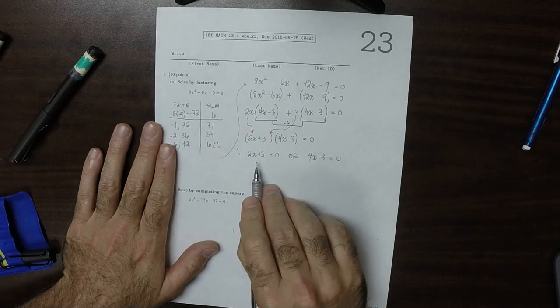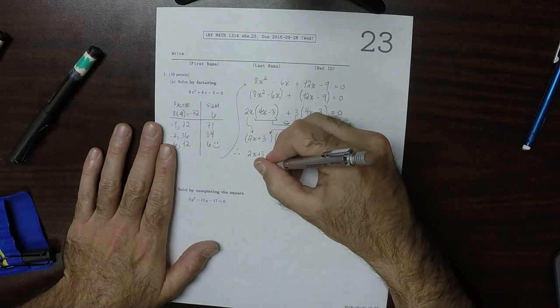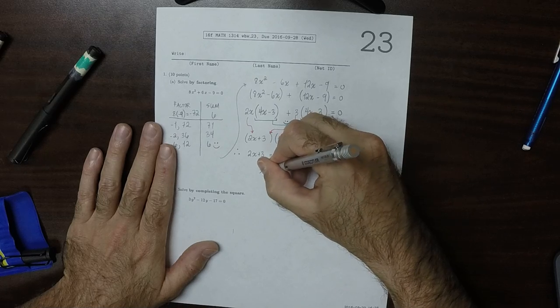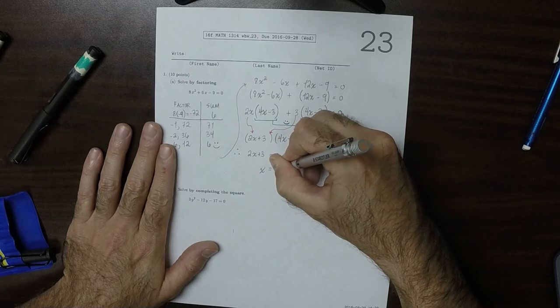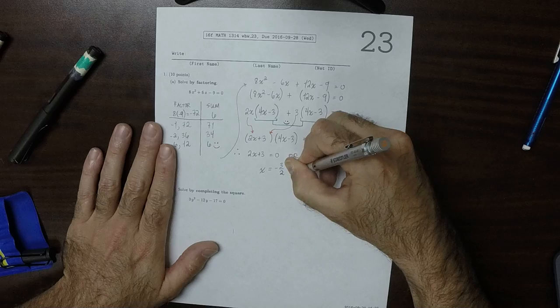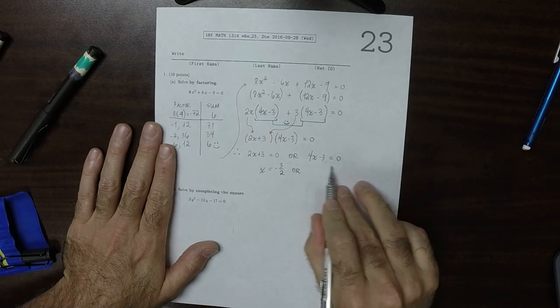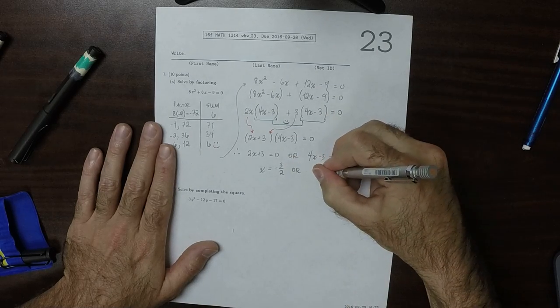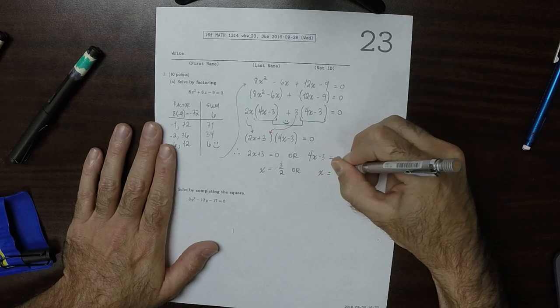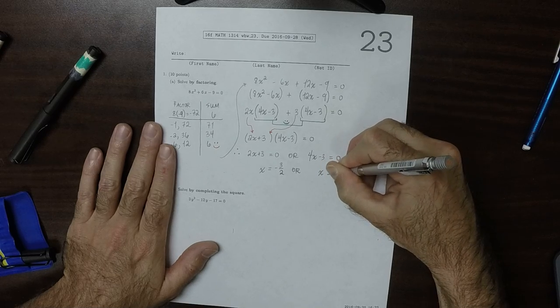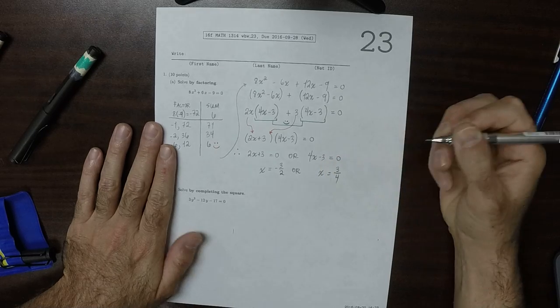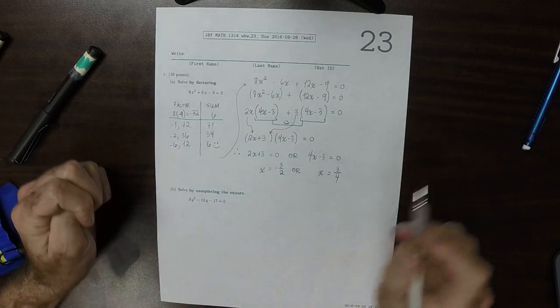we know that 2x plus 3 is 0, or 4x minus 3 is 0. Solving this one, move the 3 to the other side and divide by 2, that would be x is negative 3 halves, or move the 3 to the other side and divide by 4, x is 3 fourths.